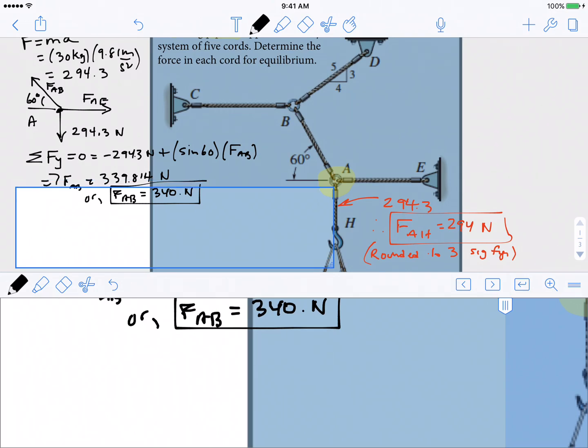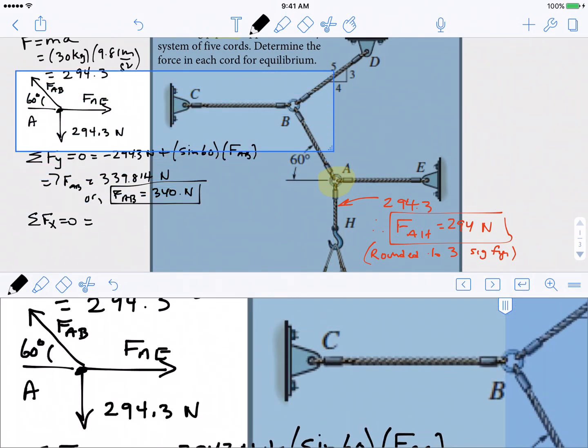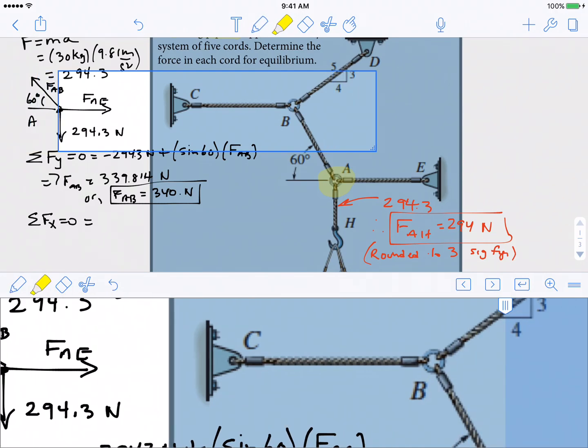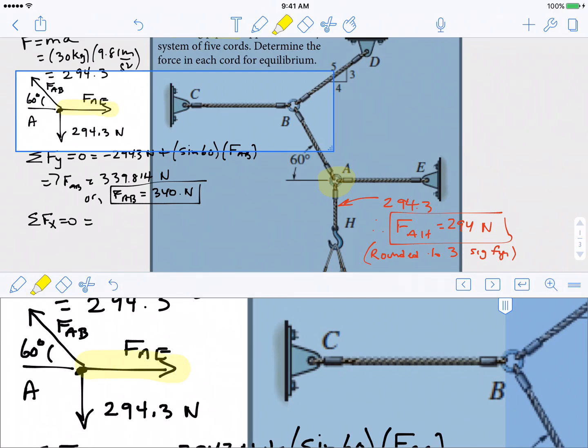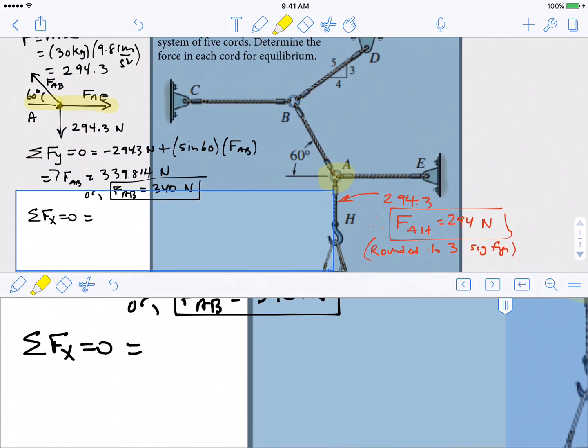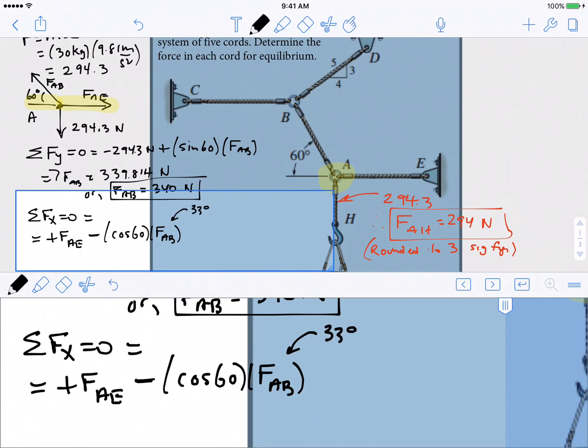We're not done yet. We have one more equation left to apply. We also can sum the forces in the x direction and set them equal to zero. I'm looking at that free body diagram of A as I'm doing this analysis. The things that contribute in the x direction is that we have FAE moving off in the x direction, and then we have the x component of FAB. So we have a positive FAE and a minus cosine of 60 times FAB. We just figured out FAB, that is 339.84. When we plug that in and solve for FAE, we find that FAE is equal to 170 newtons.